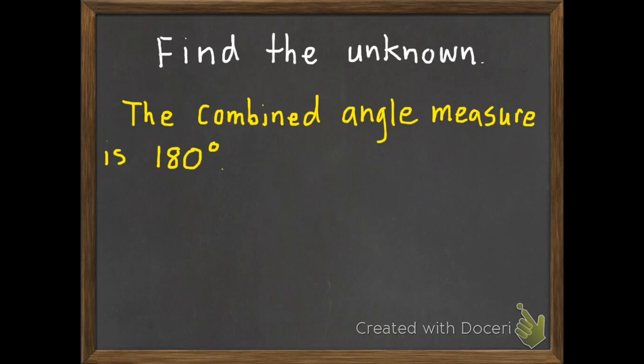This time, the combined angle measure is 180 degrees. Here are our angles. So we have one angle that is 60 degrees and one angle that we don't know. And those combined equals 180 degrees.